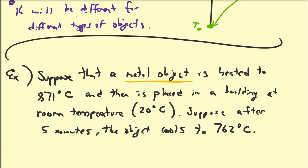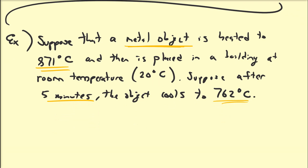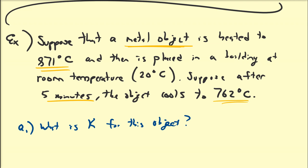After five minutes it cools down to 762. So it started at 871 and cools down to 762 after five minutes. With this information, you are able to approximate the value of the cooling constant K. So let's start off by figuring out what the cooling constant K is for this particular metal object — that's question one.